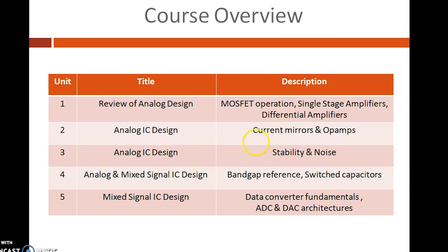The second unit starts with a very important circuit called current mirrors. Current mirrors are the basic building block used in IC biasing. This course discusses advanced current mirrors such as cascode current mirrors. High output impedance is one of the important characteristics of a current source, which is achieved using a cascode current mirror in integrated circuits. Current mirrors are followed by operational amplifiers, which form a crucial block in almost all analog ICs. Various architectures like telescopic op-amp, folded cascode op-amp, two-stage op-amp, and gain boosting op-amp are discussed. All configurations are designed from a set of specifications. The design knowledge of operational amplifiers is really important for an analog designer.